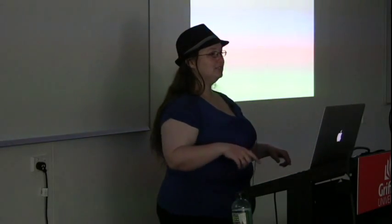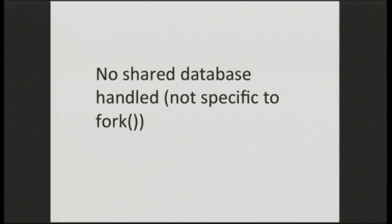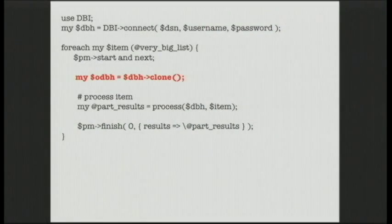Do not allow more than one of your children to be changing a file at the same time. This really should be obvious - it's very exciting when you get it wrong. Database handles are not shared - this is not just forks, it's a problem with threads as well. Some people say don't do SQL with threads and forks, but it's easy: just clone your database handle that the parent had, and you're fine. Go forth and absolutely hammer that database until your sysadmin gets unhappy with you.